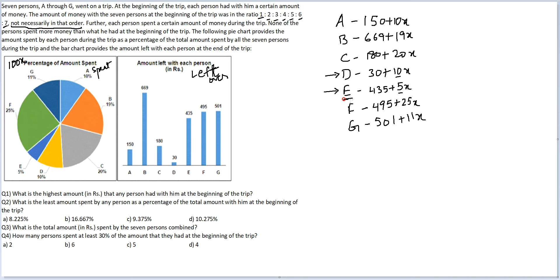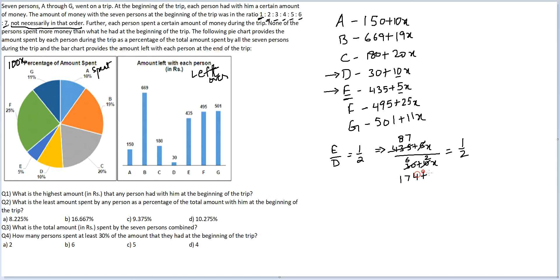If E is the smallest, then D is definitely the second smallest, so E/D = 1/2. E has 435 plus 5X and D has 30 plus 10X. Cancelling out the 5s gives 87 plus X over 6 plus 2X = 1/2, which gives 174 plus 2X = 6 plus 2X. The 2X cancels and we get 174 = 6, which makes no sense — so this is an unacceptable case.